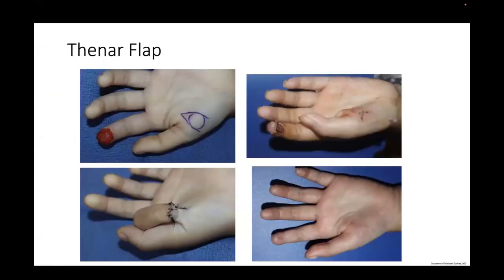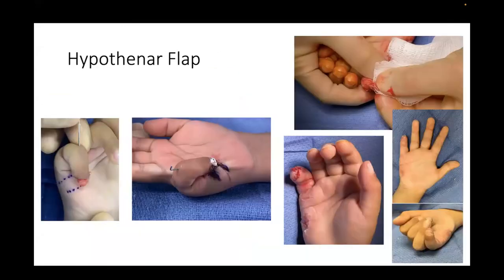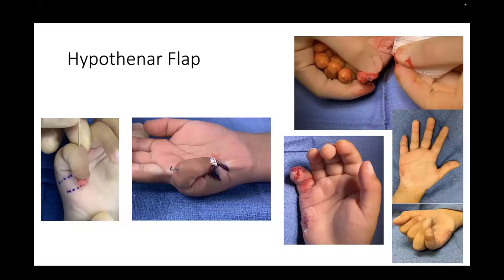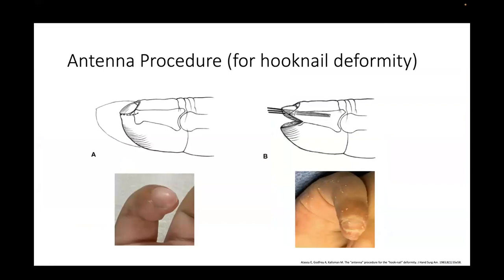The thenar flap is a good option for index and middle finger tip reconstruction, though it's hard to get the small finger over there. A patient who presented to us late had a hook nail deformity, and at the time of division, we performed the antenna procedure for correcting hook nail deformity. Pearls for cross-finger flaps include hinging at the mid-axial line, preserving peritenon over the extensor, and waiting three weeks before sectioning the flap.